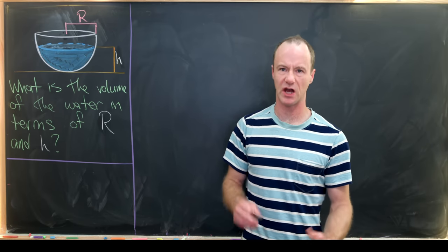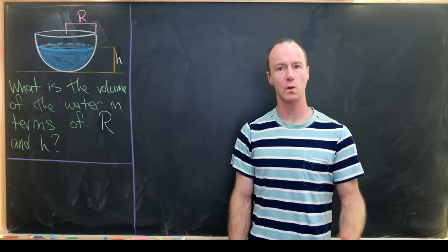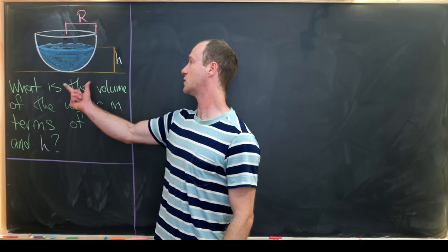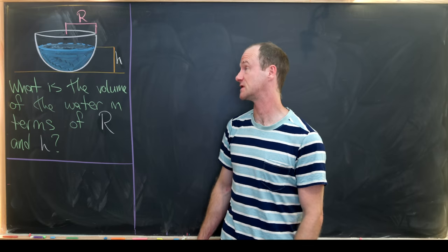I've got a pretty interesting kind of geometry problem that we're going to solve with calculus today. So what's our setup? Let's suppose we have a bowl which is in the shape of a hemisphere, so that's a half sphere.